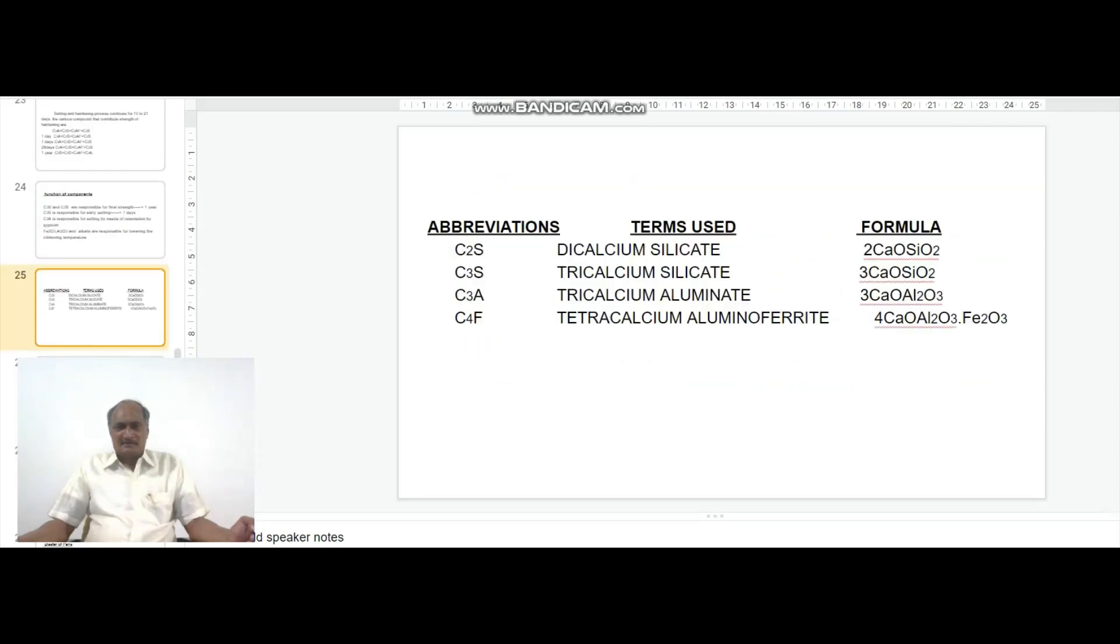Terms, abbreviations and formulas used are: C2S abbreviation indicates dicalcium silicate and its formula is 2CaO·SiO2. Dicalcium silicate, 2CaO·SiO2, is represented as C2S.